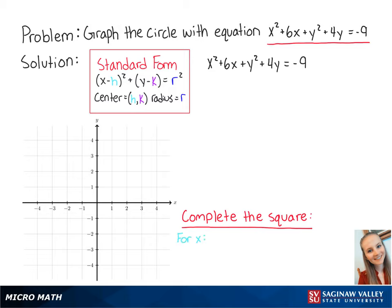To complete the square for x, we take the coefficient of x which is 6 and then we multiply it by 1 half which is equal to 3, then we take 3 and we square it which is equal to 9. So now we add 9 to both sides of the equation.